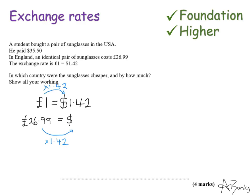In my calculator to two decimal places I get $38.33. But I've not quite finished the question yet. It asks me in which country are the sunglasses cheaper. Well this that I've just calculated is the cost of them in England and the $35.50 is the cost in the USA, so the USA is cheaper. I'm going to write that down now so I've got it, the USA is cheaper.